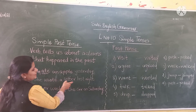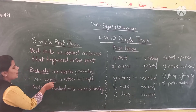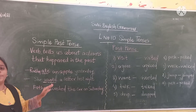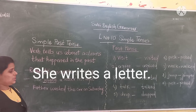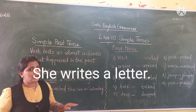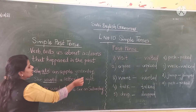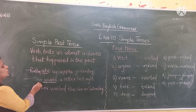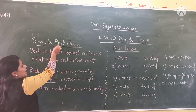Now we have the example: 'She wrote a letter last night.' Here 'wrote' tells us about past tense. If we talk about present tense, the sentence would be: 'She writes a letter.' This sentence tells you about simple present tense. But here 'wrote' — she wrote a letter last night — the verb form is changed. So this sentence tells you about past tense.